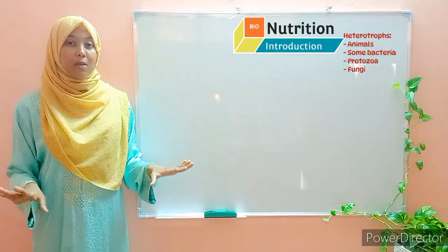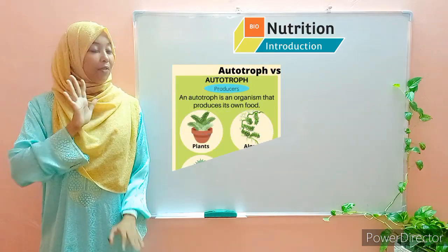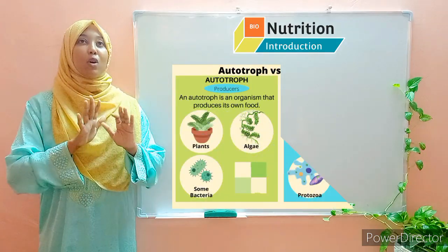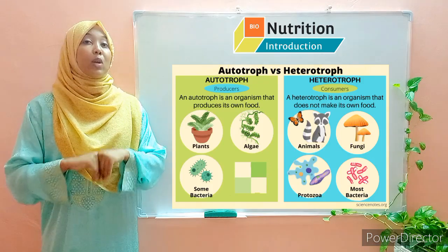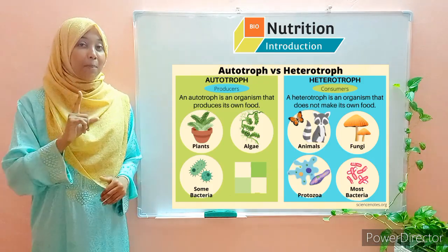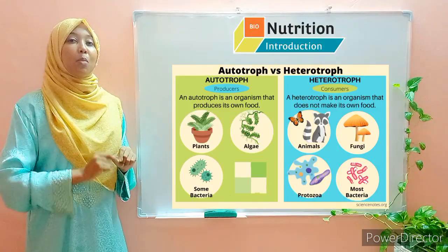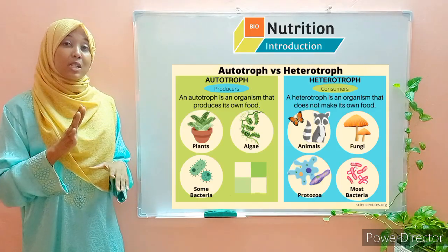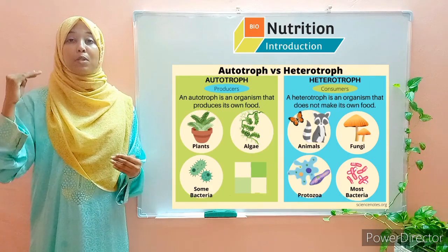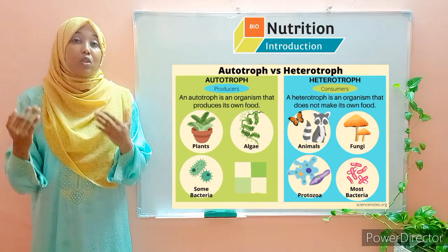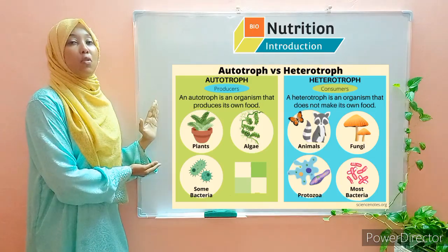Let's clarify the five kingdoms. Kingdom Monera contains the simplest organisms — bacteria — and some are autotrophic while others are heterotrophic. Kingdom Protoctista is divided into algae and protozoa. Examples of algae are Euglena, Spirogyra, and Chlamydomonas — these are photosynthetic and fall under autotrophism.